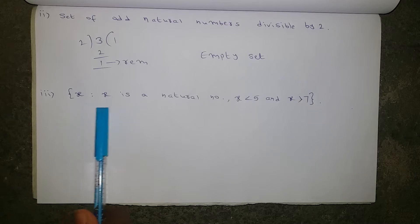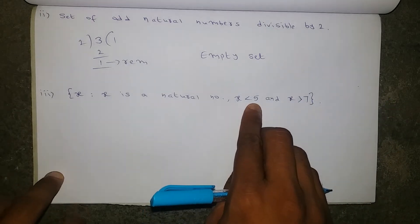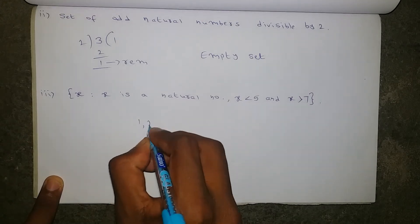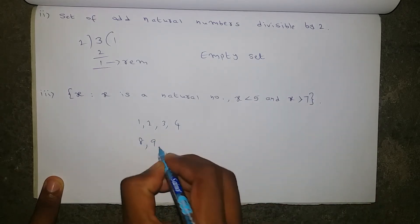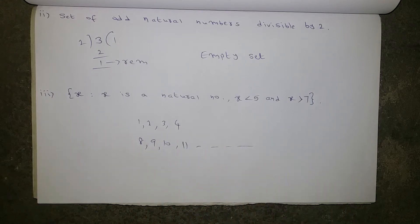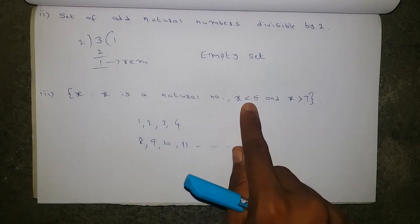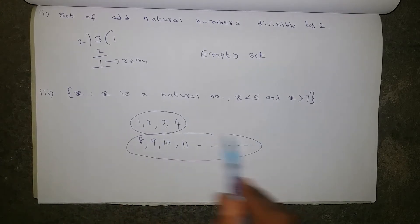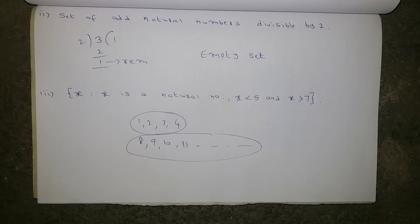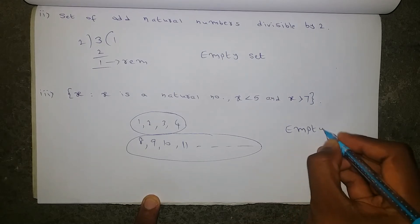Next: x such that x is a natural number, x less than 5 and x greater than 7. X less than 5 gives us natural numbers 1, 2, 3, 4. X greater than 7 gives us 8, 9, 10, 11, 12 and so on. If we observe clearly, x must be less than 5 as well as greater than 7 simultaneously. But no element is common between these two groups — no natural number is both less than 5 and greater than 7. So it is an empty set.